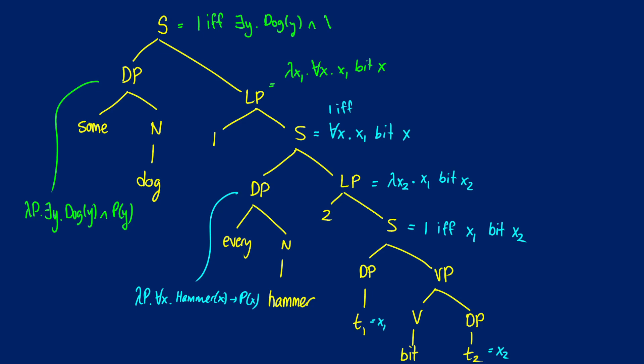Then we're going to put everything from before, for all X, and our Y's are replacing our X1's. So this would be for all X, Y bit X. So it's true if there is some Y such that Y is a dog, and for all X, Y bit X.